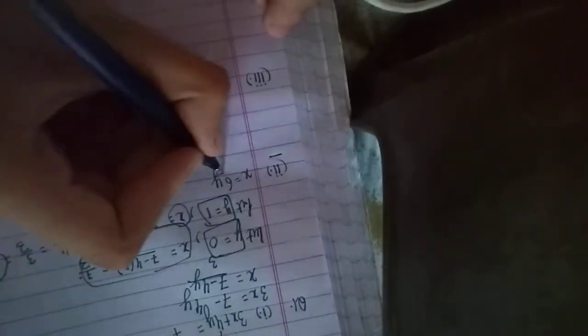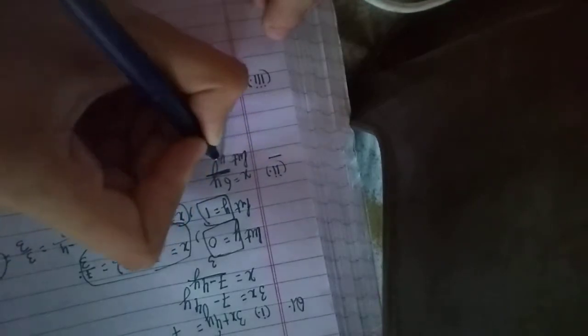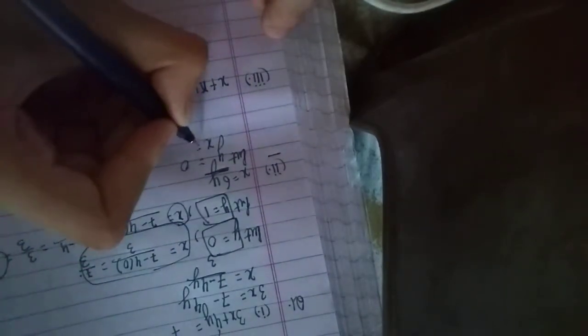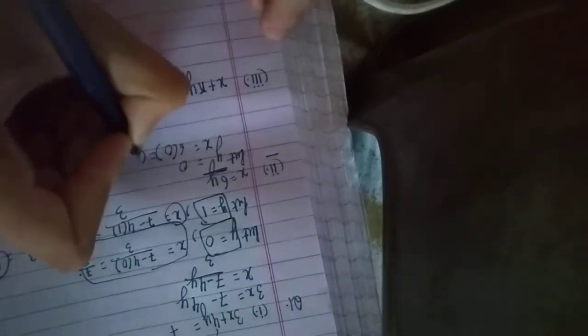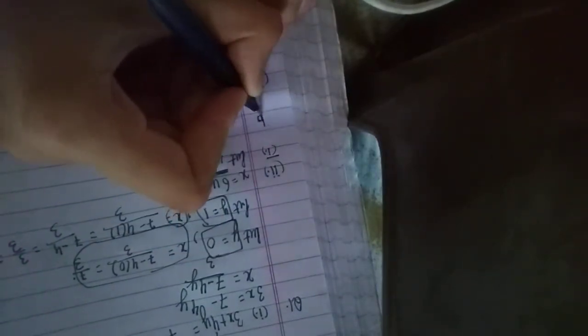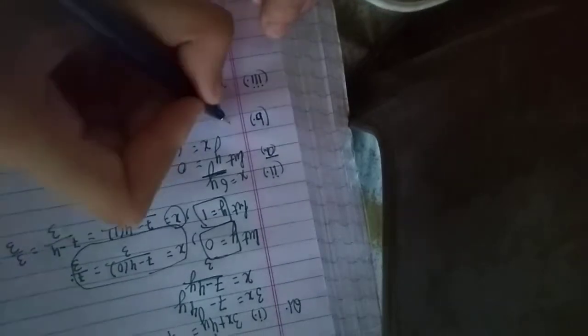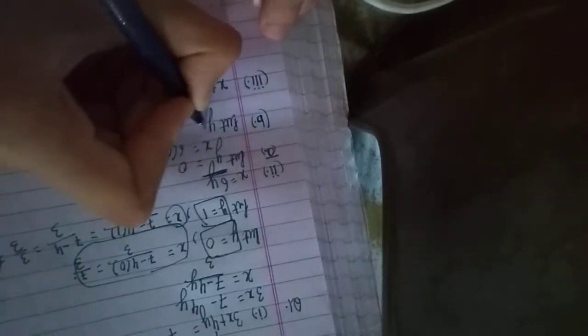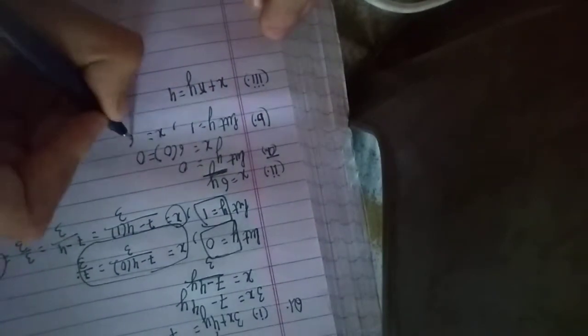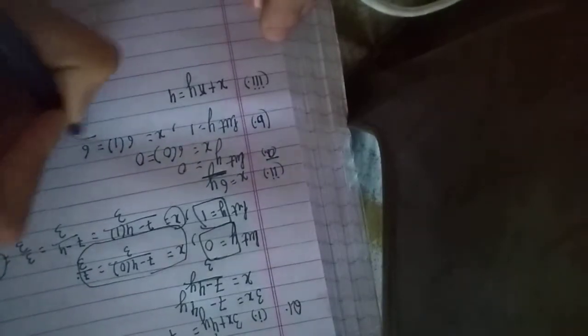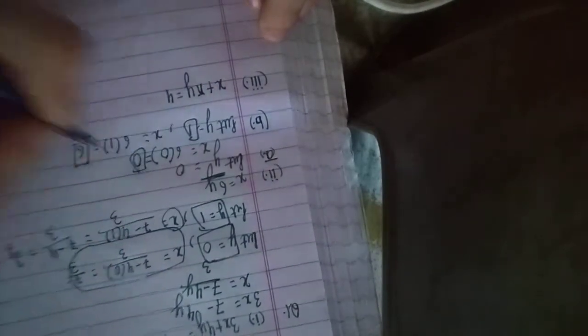Now let's solve the second part. Let's put y equals 0, so x is 6 into 0, which is 0. This is our first part. So in part b, put y equals 1, so x is 6 into 1, which is 6. So these are our two solutions.